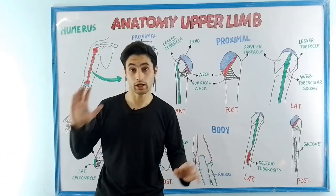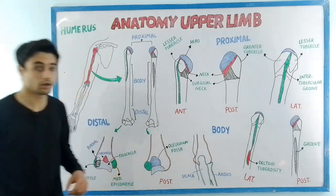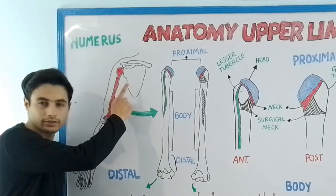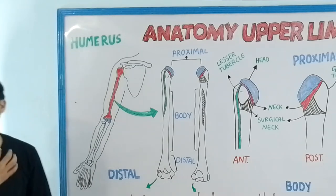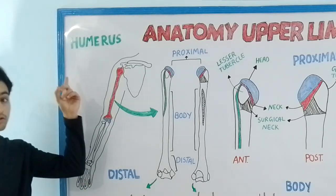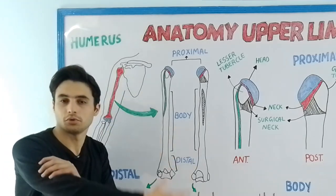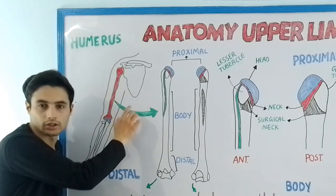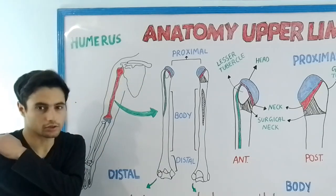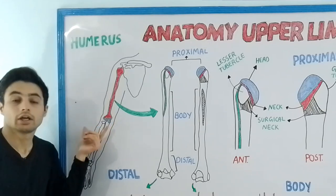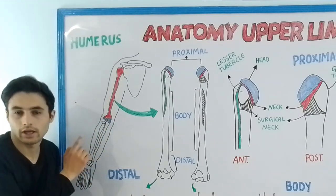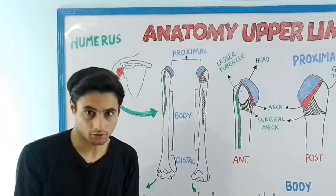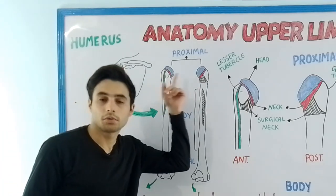In this video we are going to learn about the osteology of the humerus bone. In the previous video we learned about the bony features of the scapula and the clavicle bone — your collarbone. The humerus is the longest bone of your upper limb. It articulates proximally with the glenoid cavity of the scapula to make the glenohumeral joint, or shoulder joint, and distally with the radius and the ulna to make the elbow joint. We study the osteology of the humerus in three regions: the proximal region, the body or shaft, and the distal region.